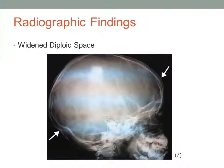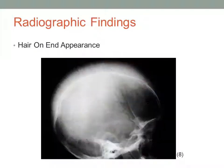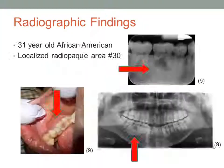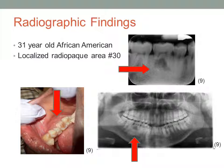This sickle cell anemia patient shows a widened diploic space due to the bone marrow hyperplasia. Another patient also has a widened diploic space and a hair-on-end appearance, which is evident around the skull. This case scenario shows a localized radiolucent area caused by a bone infarction. These radiolucent areas will be replaced by radiopacities after the bone is repaired.